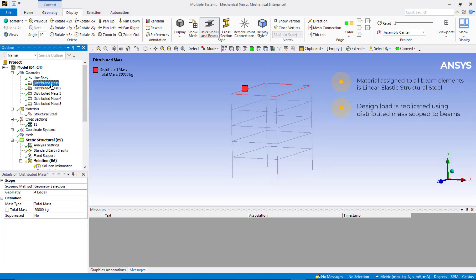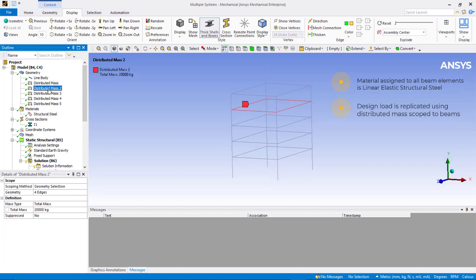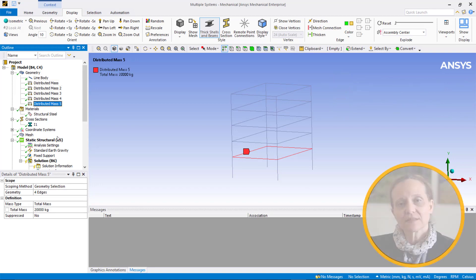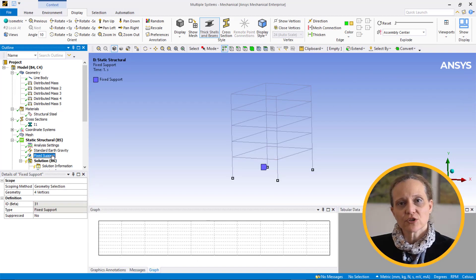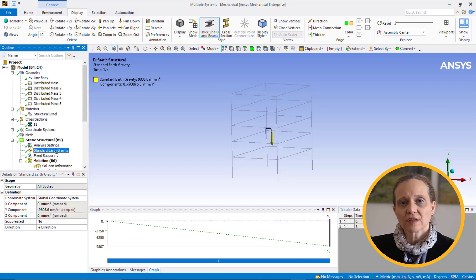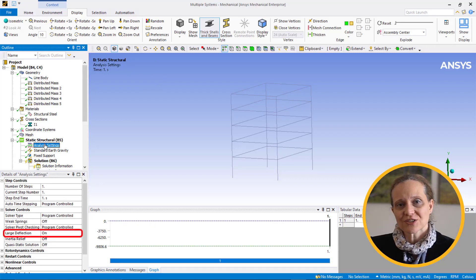A distributed mass has been scoped to the floor beams and assigned a mass to represent a specified design load for each floor. Expanding the static structural environment branch, we see that foundation points at base of a building have all been fixed. Standard air gravity load is applied. Under analysis settings, large deflection is on.